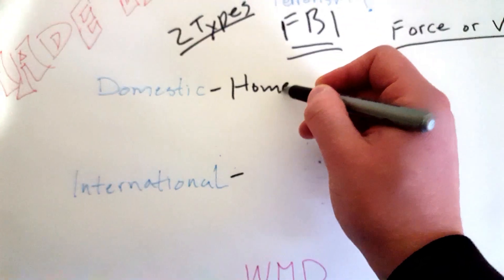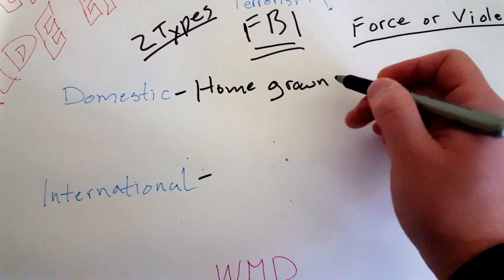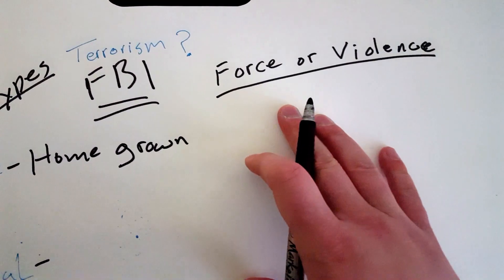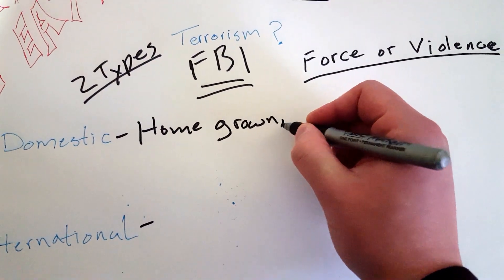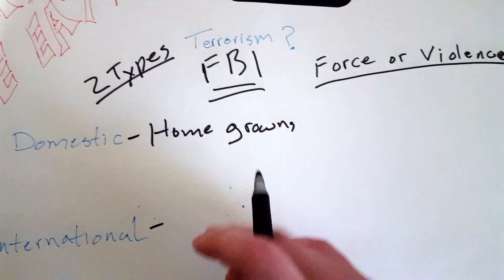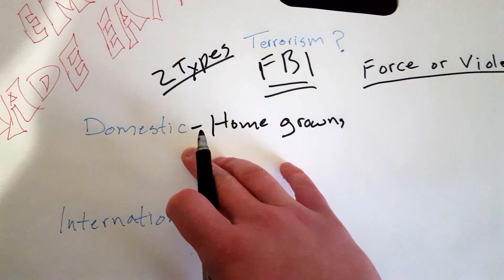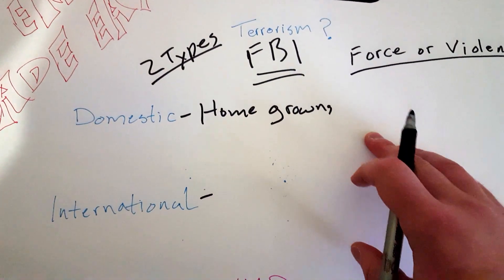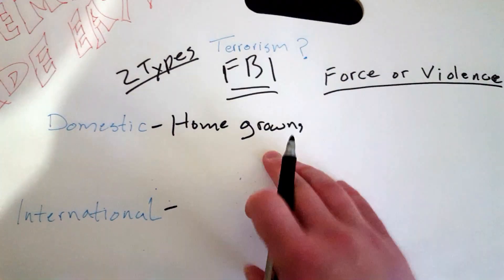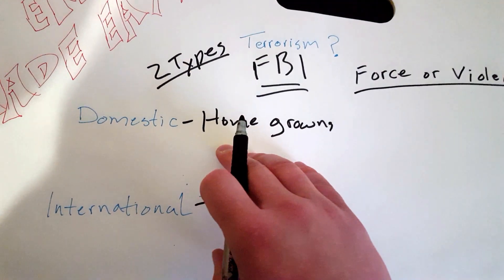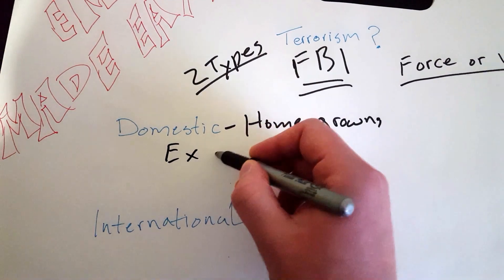Domestic really just means that they're homegrown, so they are from that country, nation, or region that they're actually using force against or violence against to terrorize. If I sound a little odd today, a little different, I'm a little sick and congested, so my voice is a little weird. But domestic terrorism means that they are homegrown—the person or group of individuals that are terrorizing using force or violence against the nation are from that country or nation.